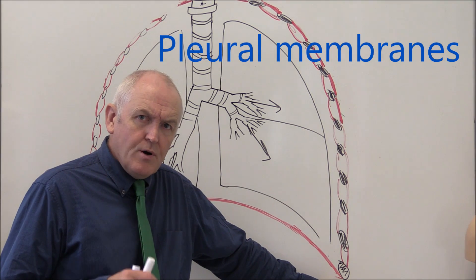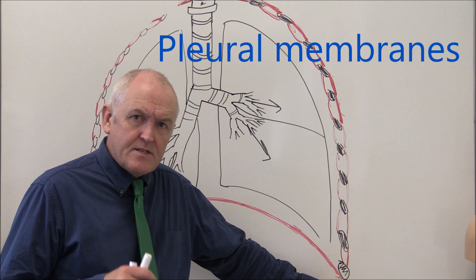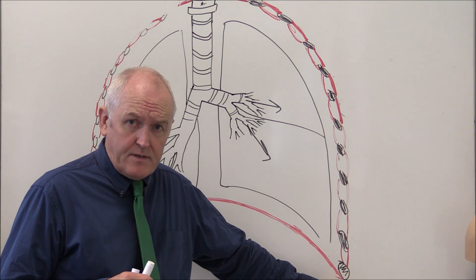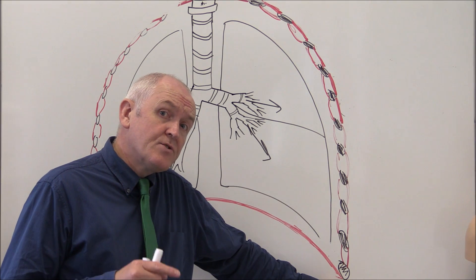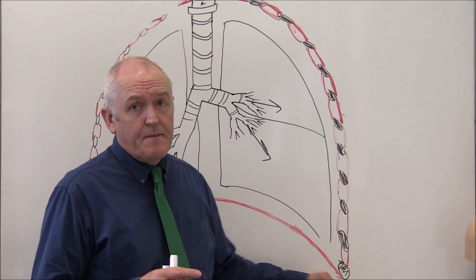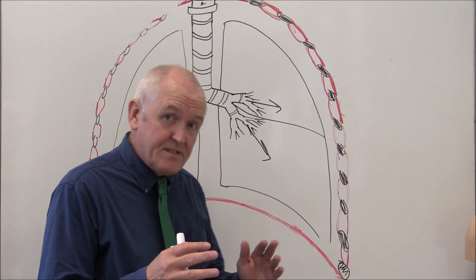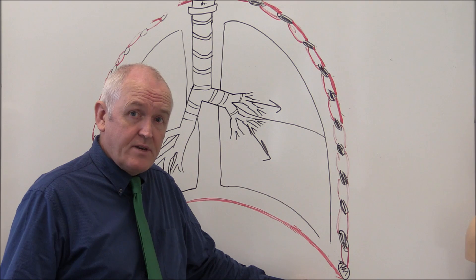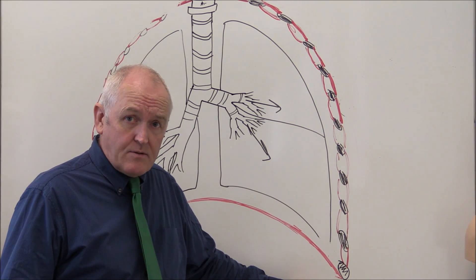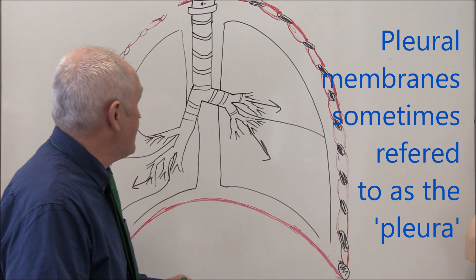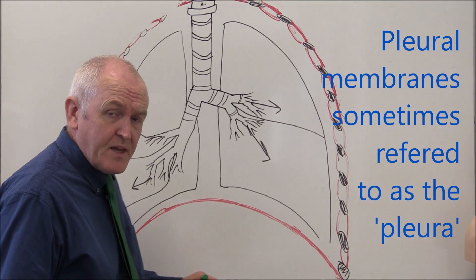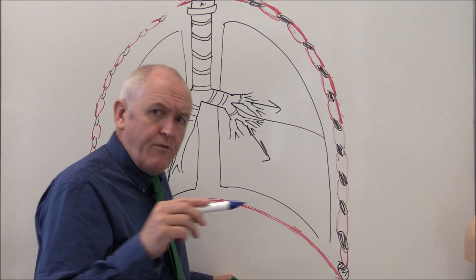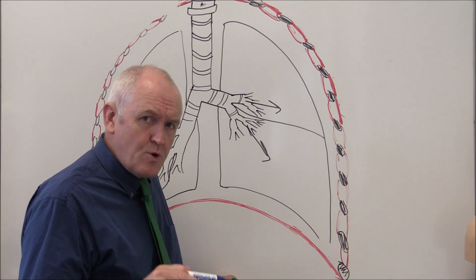We want to think now about the pleural membranes that surround the lungs and line the inside of the thoracic cavity. It's essential to understand these membranes to understand the mechanics and the mechanisms of what is actually going on to facilitate the process of breathing in and breathing out. Just a little bit of anatomy: there's actually only one pleural membrane, but it's folded in on itself, so it's much better to think about two pleural membranes.